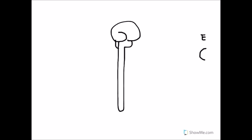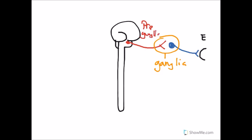These effector cells are going to be controlled by neurons. There are neurons residing inside the central nervous system — let's put one in the brain. That neuron gives off an axon, forms another neuron, then synapses and gives off another axon to control the effector. Surrounding those would be a structure called a ganglia — a collection of neuron cell bodies in the peripheral nervous system. The neuron coming from the CNS to the ganglia is referred to as pre-ganglionic, and the one after it is called post-ganglionic.